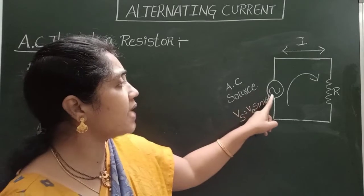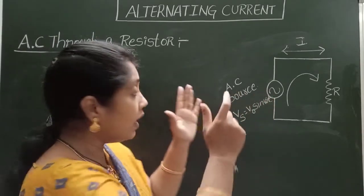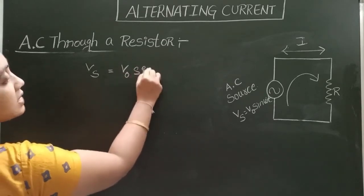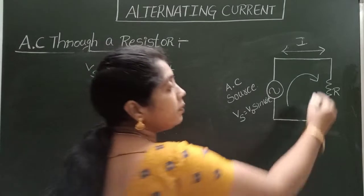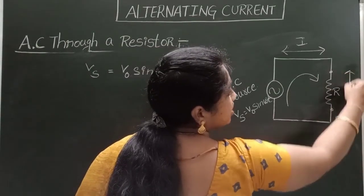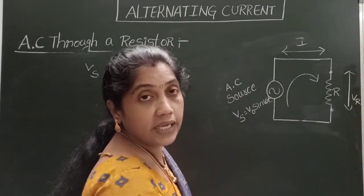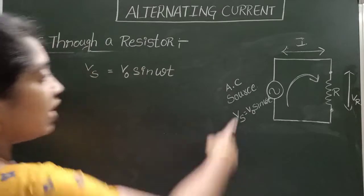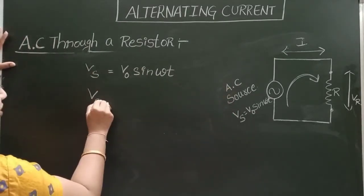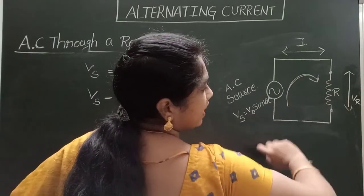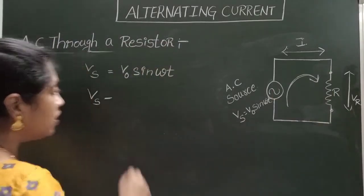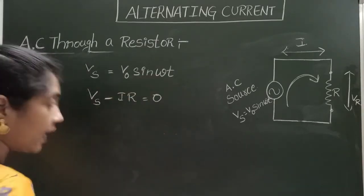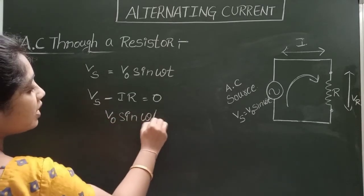Now, what about the instantaneous value of the alternating EMF in this circuit? The source provides Vs = V₀ sin(ωt). The potential difference across the terminals of the resistor is V. By applying Kirchhoff's voltage law, taking the current direction as clockwise: Vs minus IR equals zero. Since Vs = V₀ sin(ωt), we get V₀ sin(ωt) = IR.